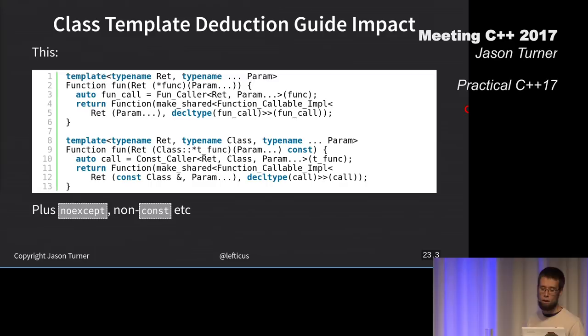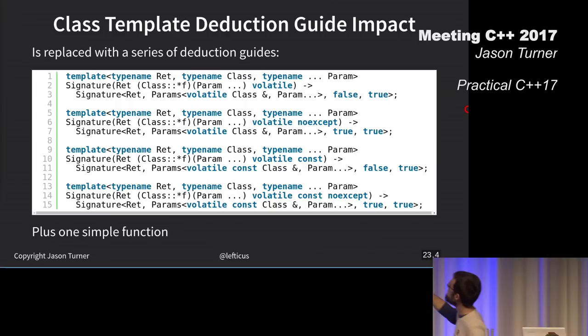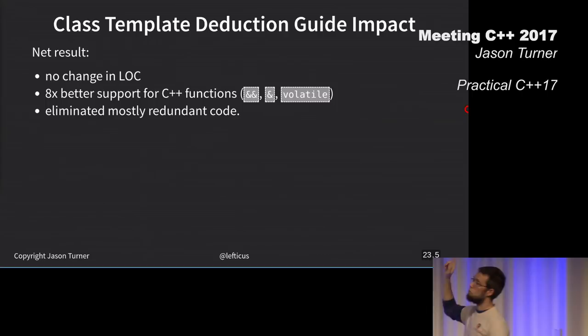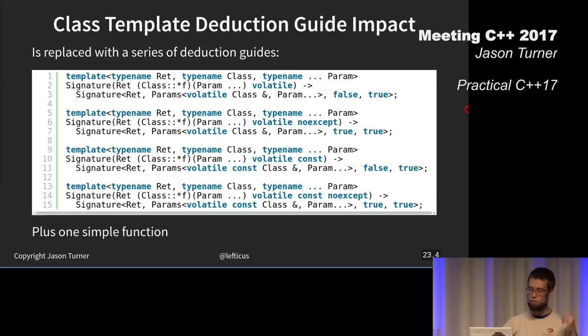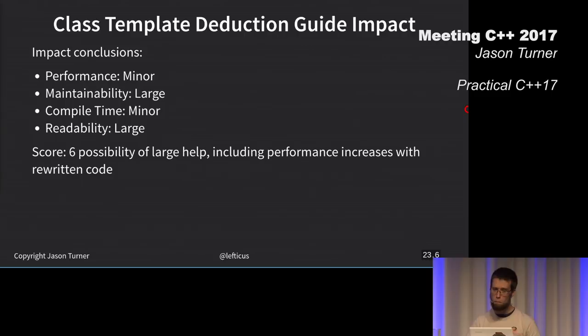These deduction guides are awesome. If anyone's curious about these, you can send me an email and I can show you where I actually implemented them in my code base. The net result for me was no change in lines of code, but I got eight times better support for C++ function overloads. Because now I can support reference qualified methods and volatile methods in a much easier way with this kind of peeling off the types using deduction guides. I said this was a huge help. It helped with compile time a little bit, and performance a little bit, but not huge.